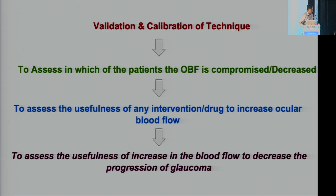These techniques—OCT angiography and ocular Doppler—are expensive, require reproducibility-trained radiologists, costly machines, and we lack long-term data and normative data. We should go ahead with validation and calibration of our technique: train interns and optometrists, identify patients where ocular blood flow may be compromised, assess the usefulness of any intervention—whether drug or cardiological—in increasing ocular blood flow, and ultimately determine whether increased ocular blood flow can lead to any decrease in glaucoma progression. That question still needs to be answered.